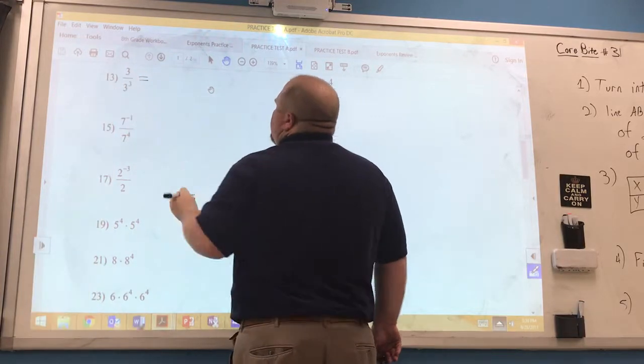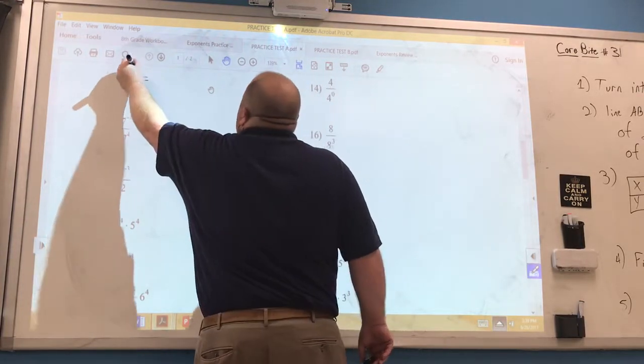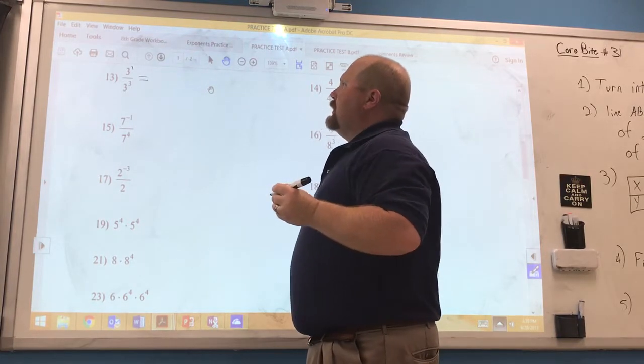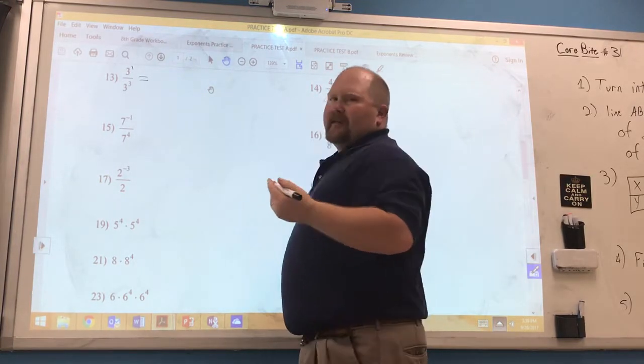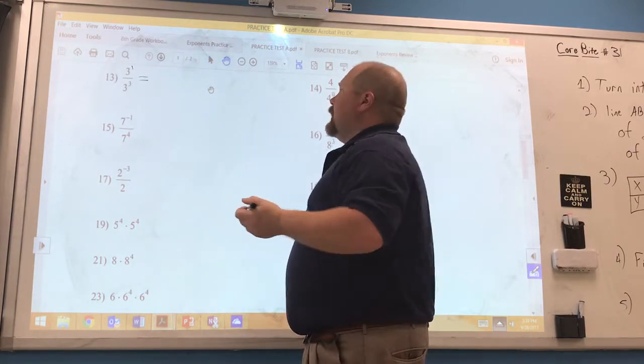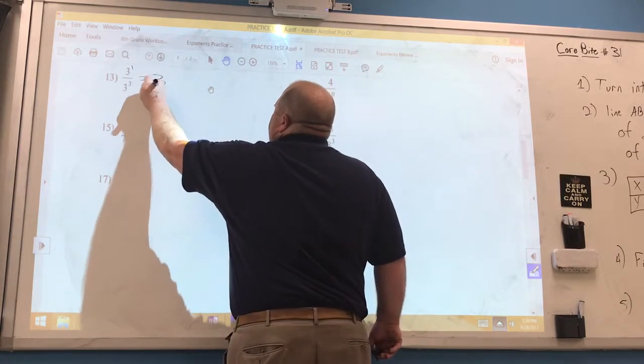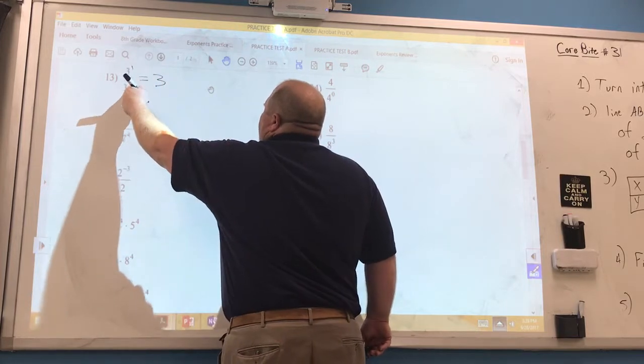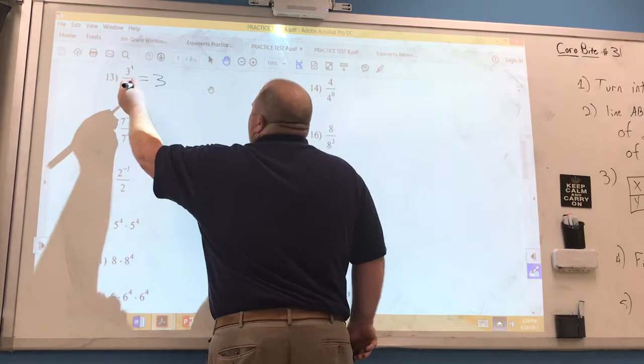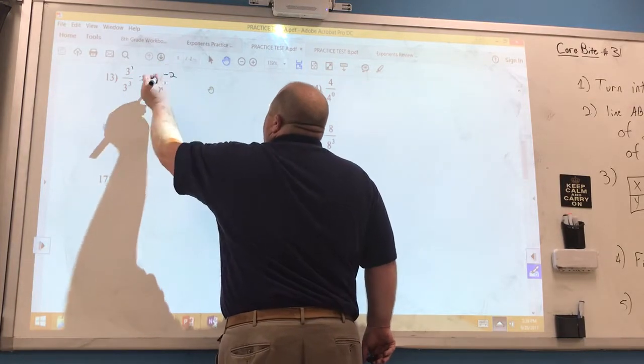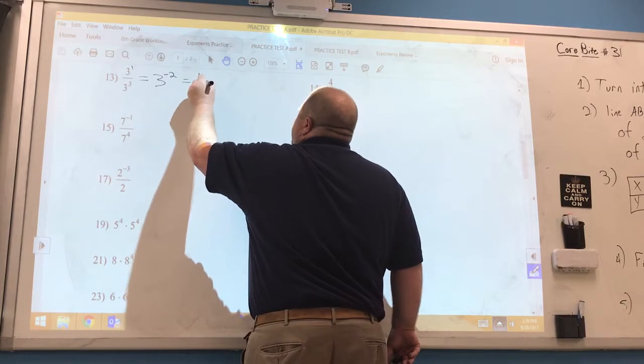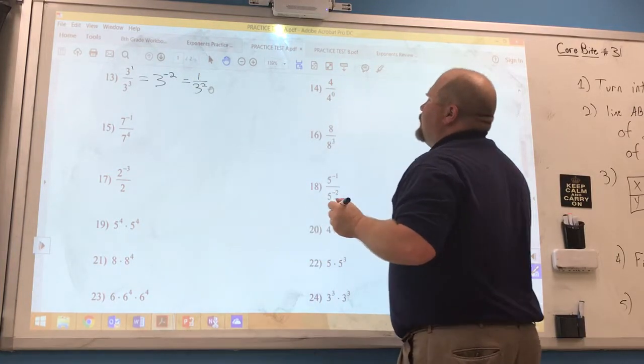Problem 13 is dividing like bases. We know that there is an understood 1 up here in this numerator. So when you divide like bases, you subtract exponents and the base stays the same. So we know the base will be a 3, and we're doing 1 minus 3. It's always the top exponent minus the bottom, and so 1 minus 3 is going to be negative 2. And we have to make that positive by making it a fraction. So 1 over 3 to the second power.